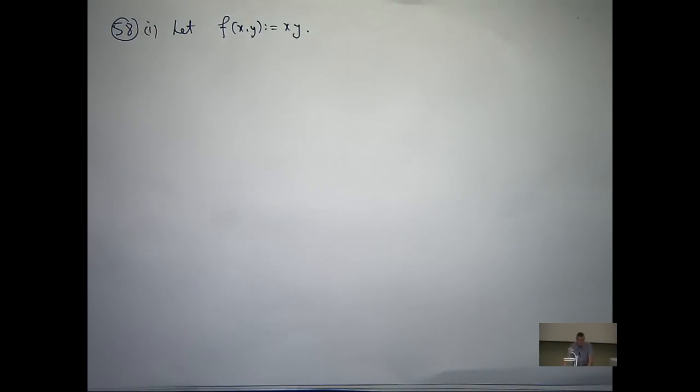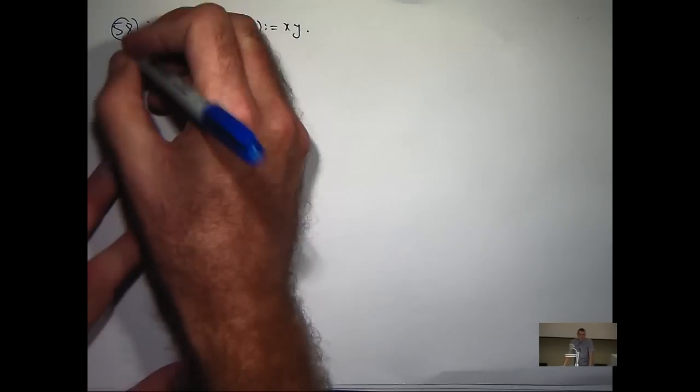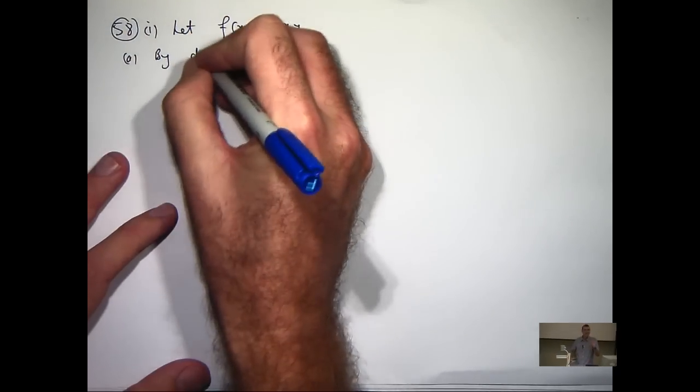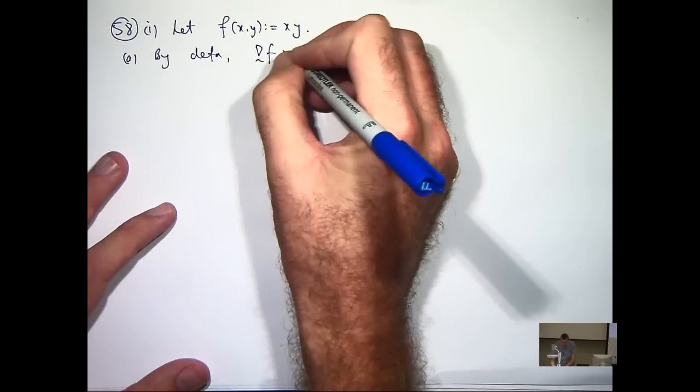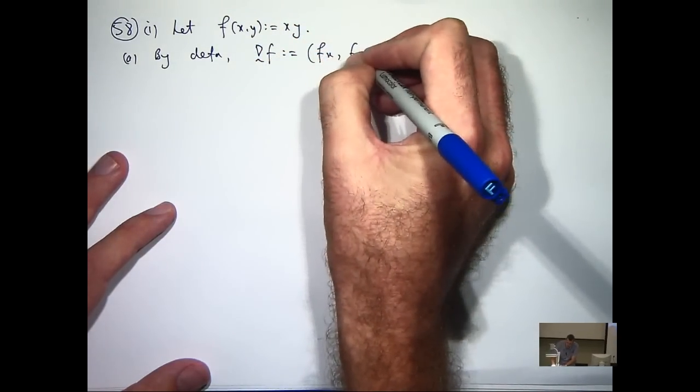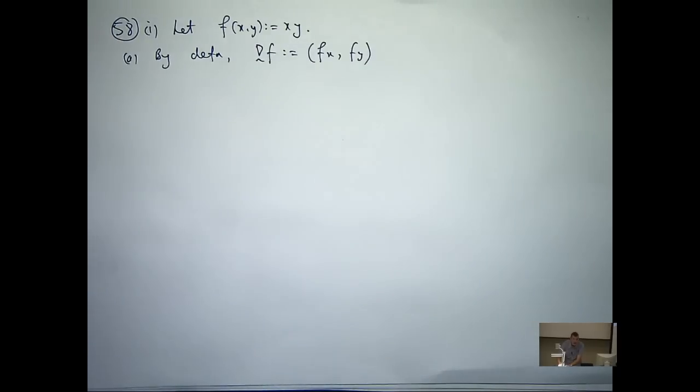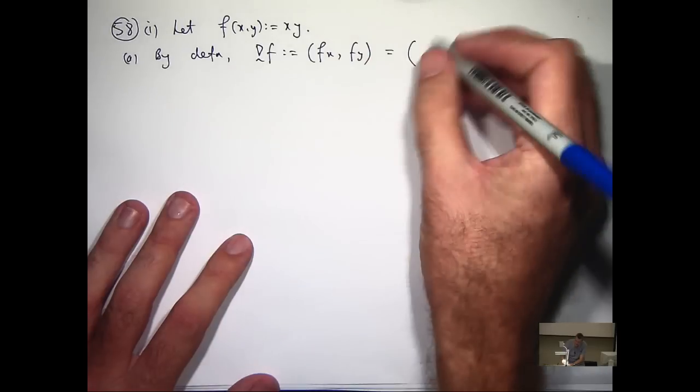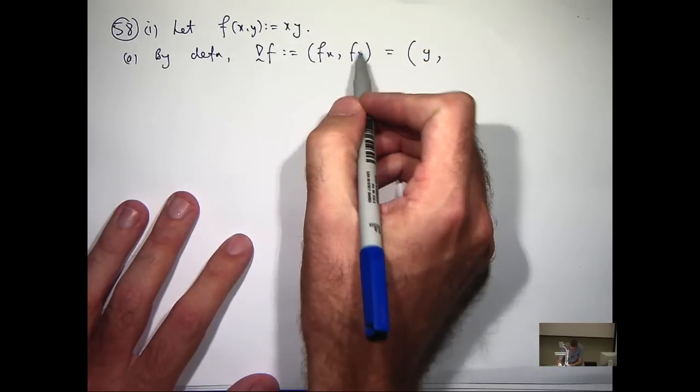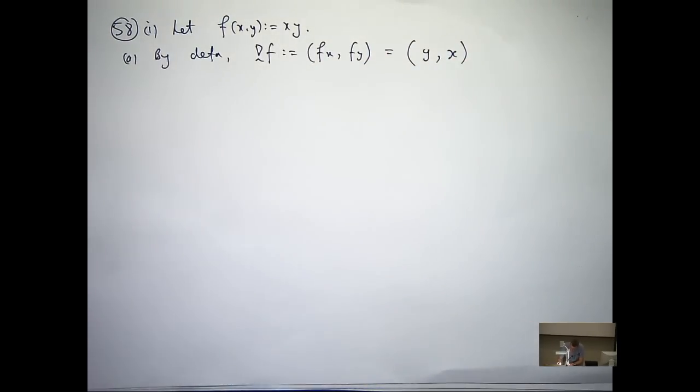So the first part of the question is calculate the gradient of f. So by the subscripts, of course, I mean differentiate with respect to, so f sub x means df dx. So if we differentiate partially with respect to x, we're going to get y. And if we differentiate with respect to y, we're going to get x.